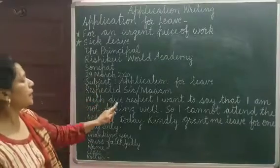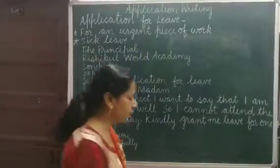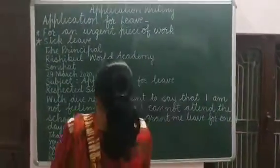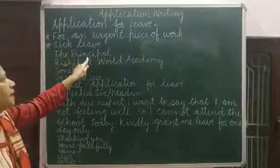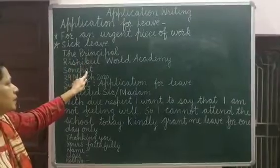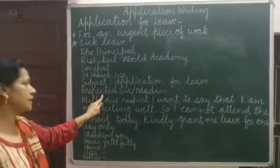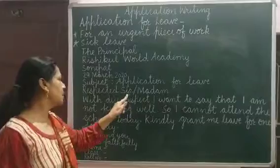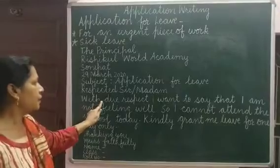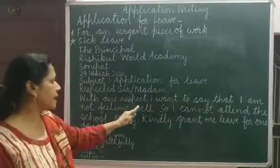Now I will tell you how to write an application for an urgent piece of work by changing one line only. You will write the same — name of the principal, name of the school, name of the city, date, and subject. It will remain the same. Then you will start with the salutation 'Respected Sir or Ma'am,' and the content will also remain the same: 'With due respect, I want to say that...' — now you will change only this line.